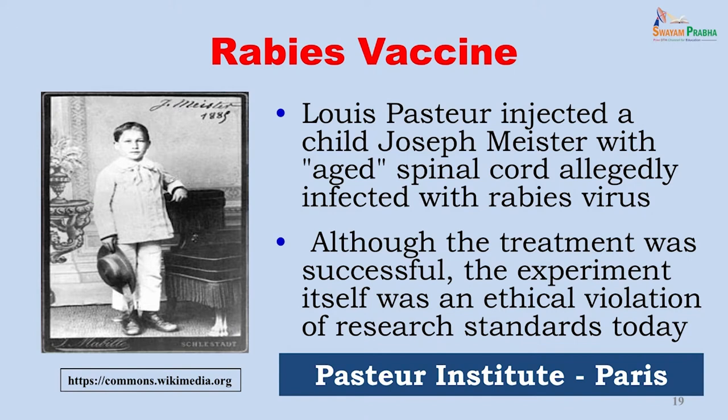His famous experiment involved injecting a child, Joseph Meister — shown in this photograph — with the aged spinal cord of a rabid dog. Joseph Meister recovered from his rabies, which was an excellent demonstration of the use of vaccination in therapy. Although his treatment was successful, the experiment was an ethical violation of research standards today — he was a chemist, not authorized to inject organisms into another individual, and this would not be acceptable today. On his name, the Pasteur Institute in Paris still works on vaccines and other microbes towards the good of humanity on a no-profit, no-cost basis.